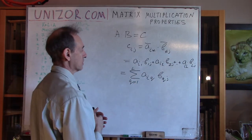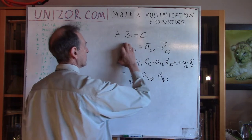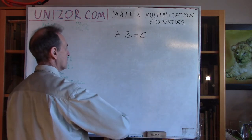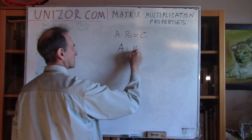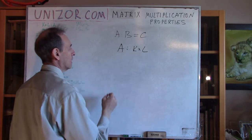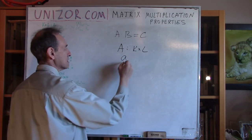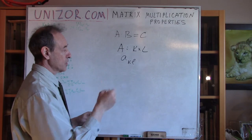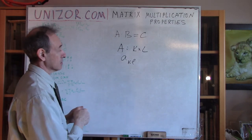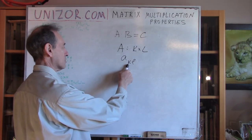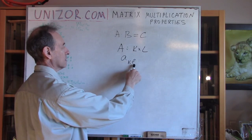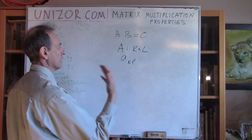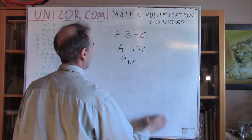Another convenience: if my matrix A has dimensions K by L, I will most likely use indices lowercase k and lowercase l for elements of this matrix, which implies lowercase k changes from one to capital K, and lowercase l changes from one to capital L. That's just a convenience to remind us of the dimensions of the matrix.